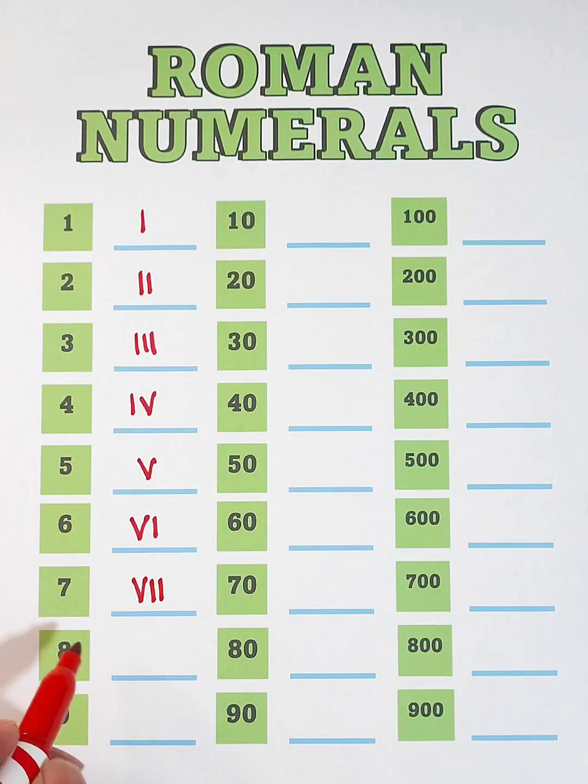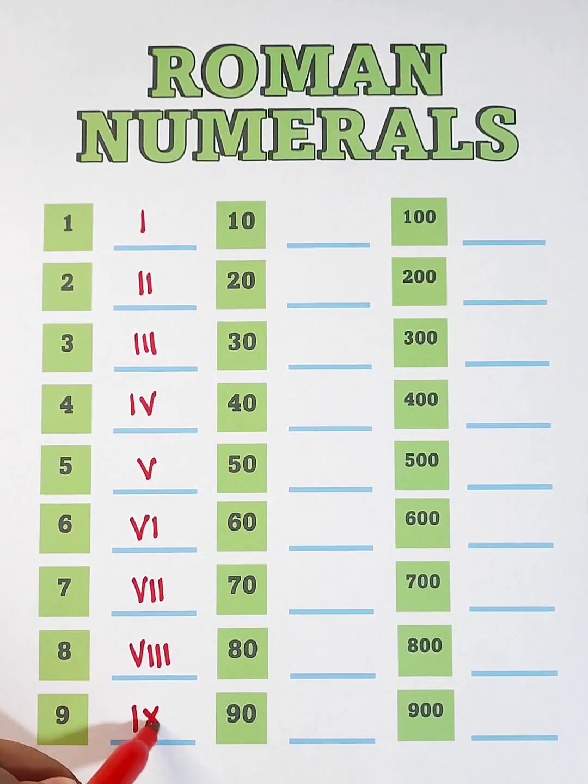For 8, that is V, I, I, and I. And lastly, for number 9, that is 1 before 10, or I and X.